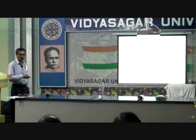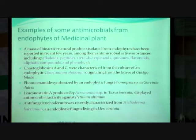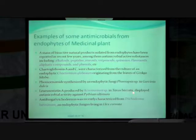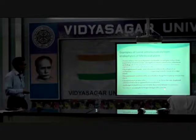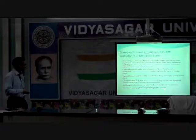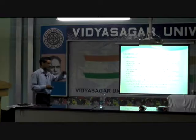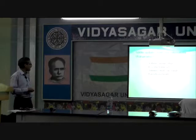For example, considering antimicrobials, there are many different antimicrobial components like alkaloids, peptides, and steroids produced. From Ginkgo biloba, a fungus Chaetomium globosum was isolated, which produces Chaetoglobosin A and C — these components have broad spectrum antimicrobial activities. From Garcinia dulcis, a fungus Phomopsis was isolated that produces antimicrobial components. From Taxus baccata, Acremonium was isolated, effective against Pythium, a plant pathogen. From another plant Lilac carnata, different species of Trichoderma were isolated that produce an antifungal component called Trichodermin. These are already reported by previous workers.